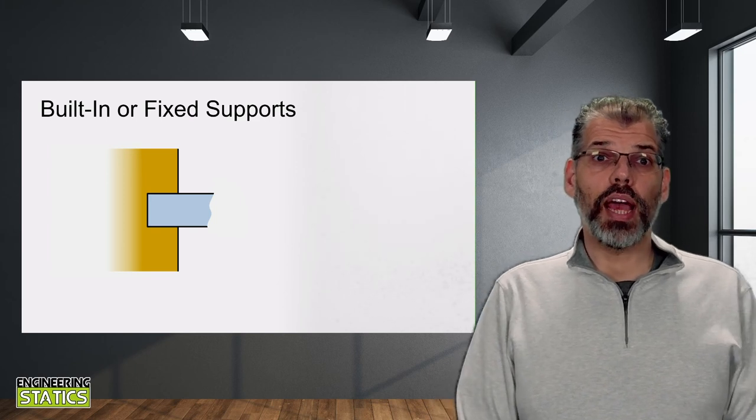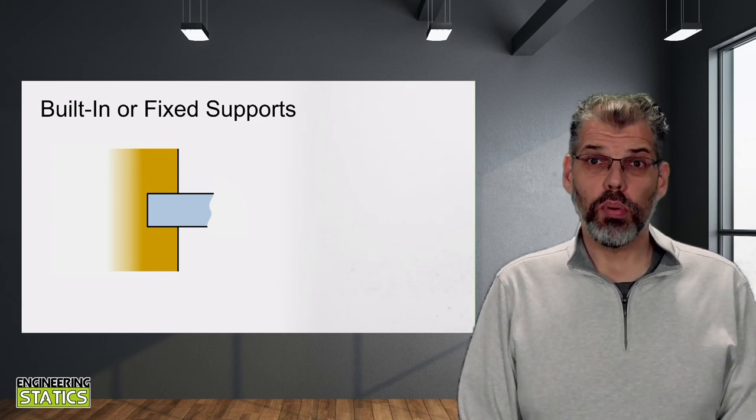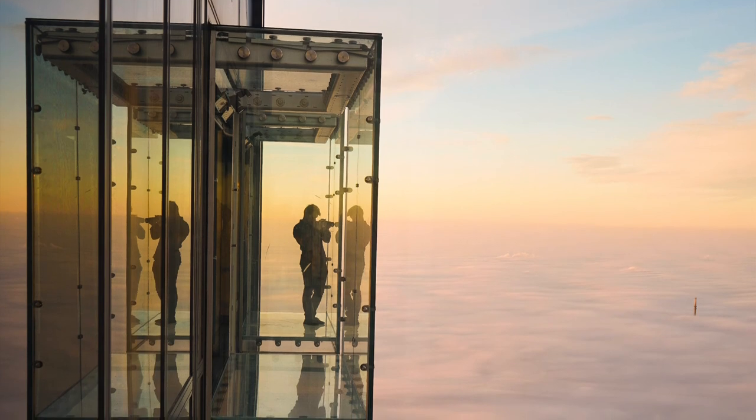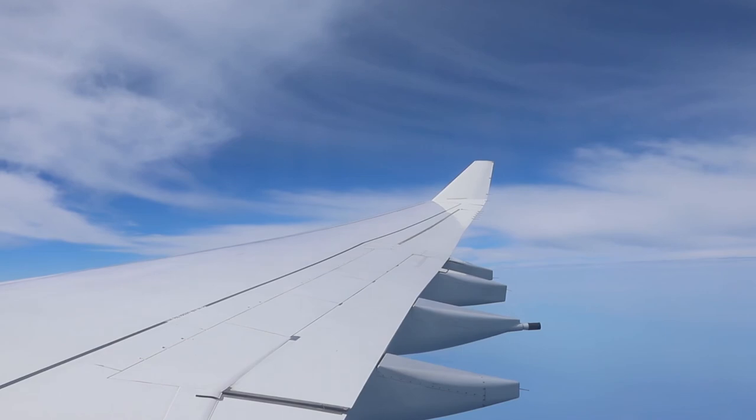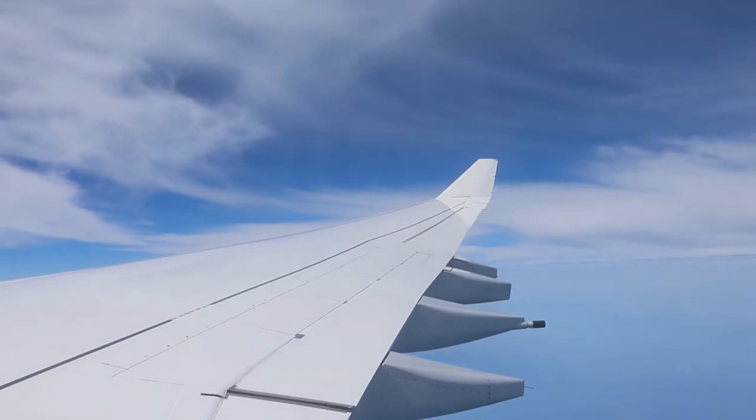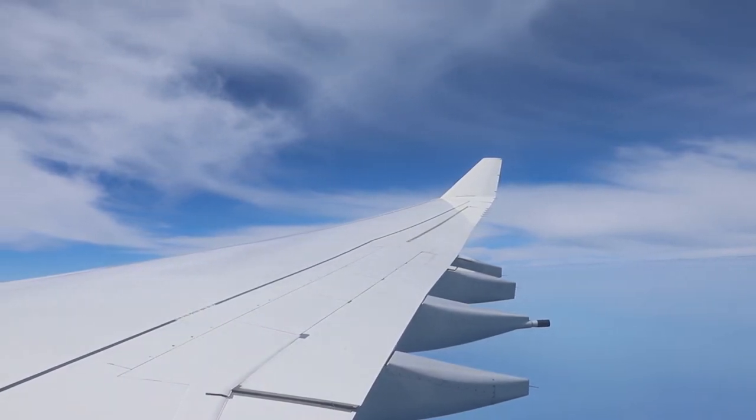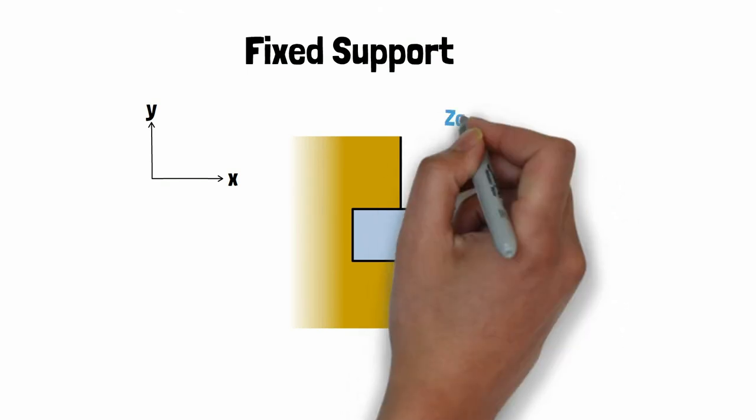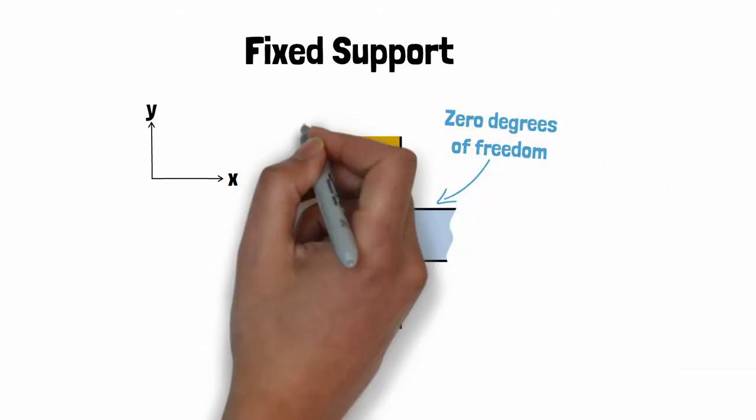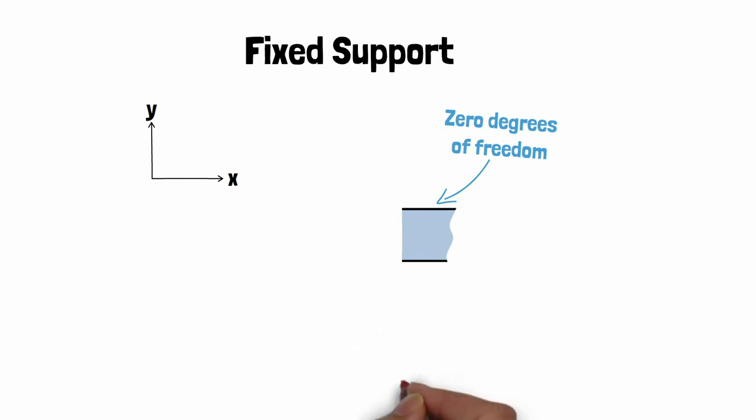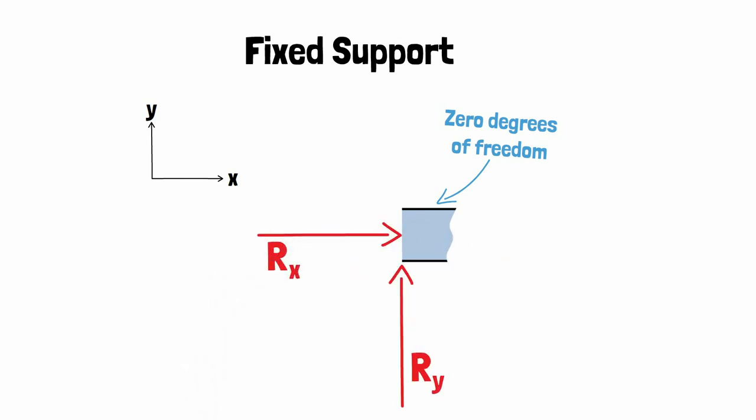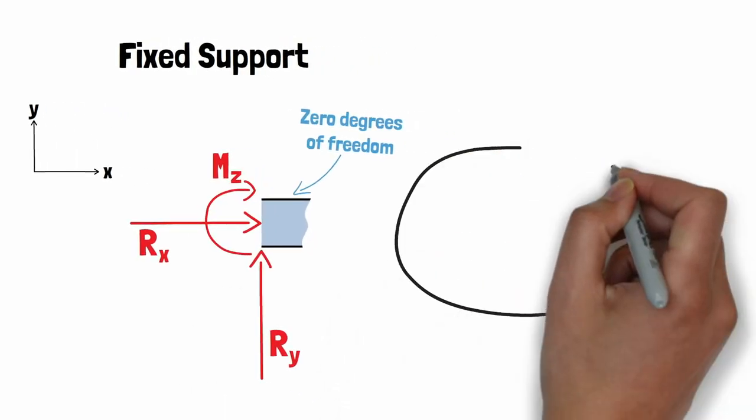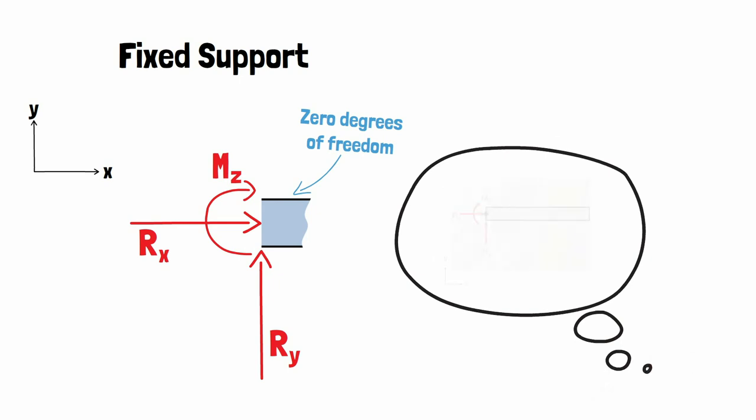The next category is known as a built-in or fixed support. The body is rigidly fixed to another body, preventing it from translating or rotating. How many degrees of freedom would such a constraint have in a 2D problem then? A fixed support constrains all degrees of freedom. In a 2D problem, this means we need to constrain the two translations with reaction forces and the one rotation with a reaction moment. This is precisely the case we analyzed earlier with the top tube of the bike frame.